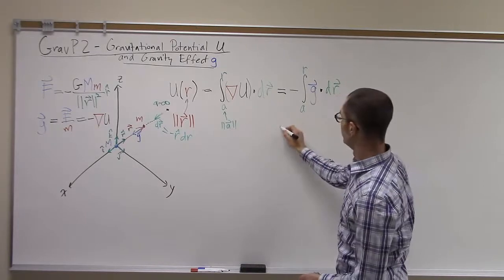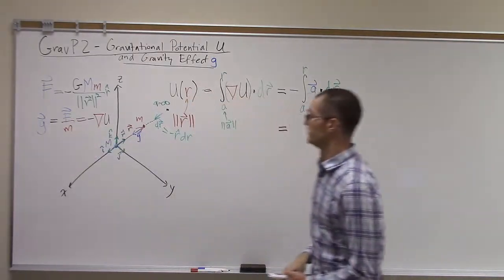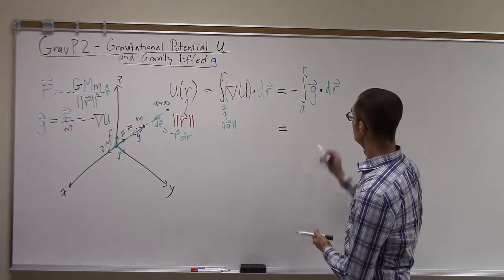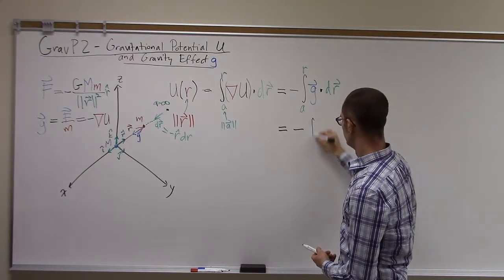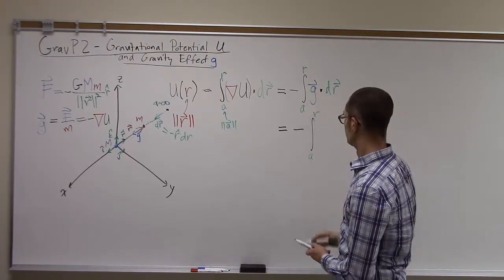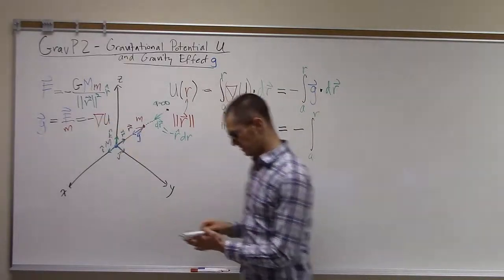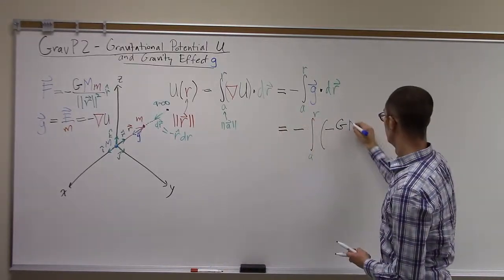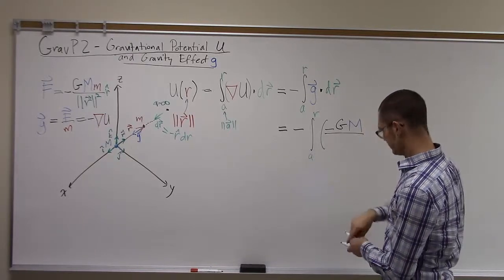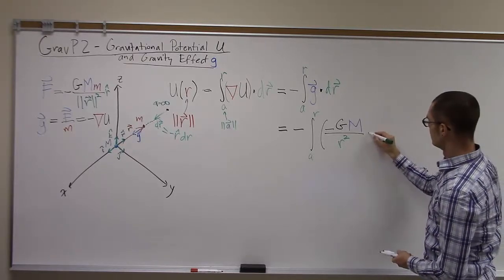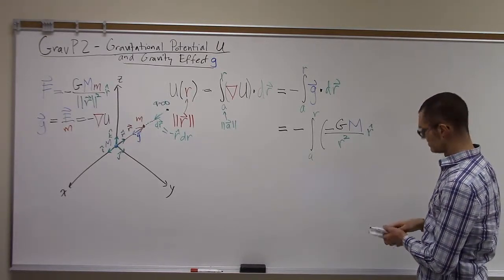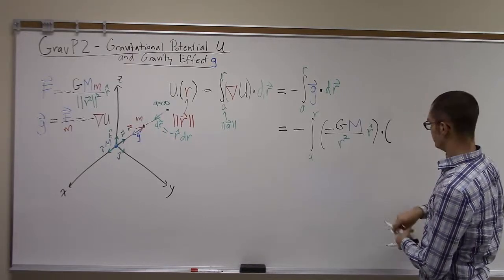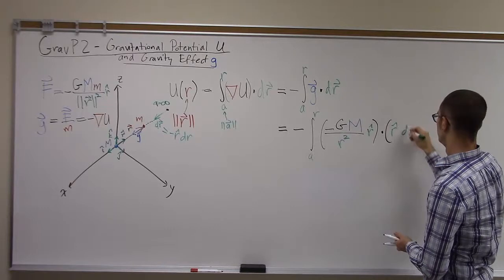So when we work this out here, now we'll put in our g field here. So we have our negative integral from a to r of g. So we'll put in the g field now, negative GM over r squared r hat. And then we'll dot it with our dr, which is actually equal to r hat dr.